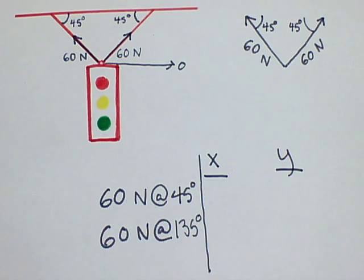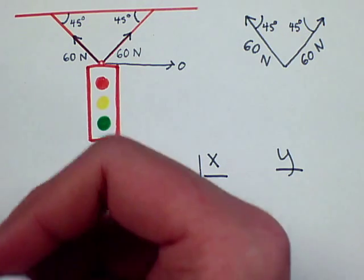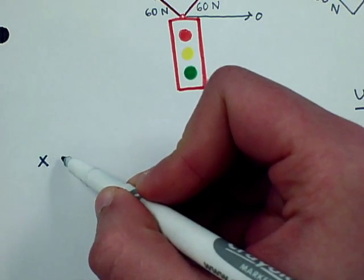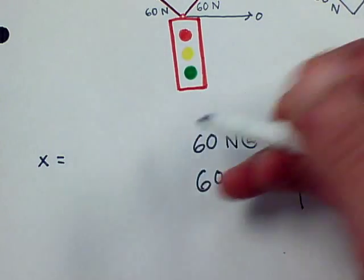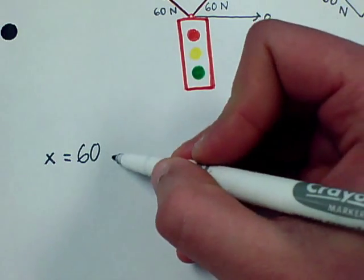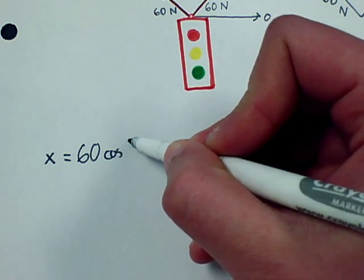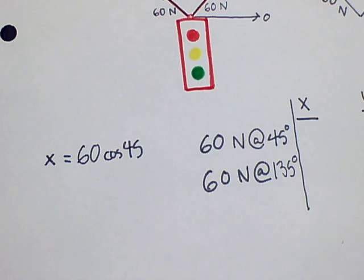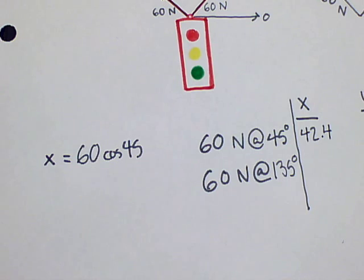Alright, to solve for the x component, you are going to use the equation force times the cosine of the degrees. So for the x component of our first, we have 60 cosine 45, which is equal to 42.44.